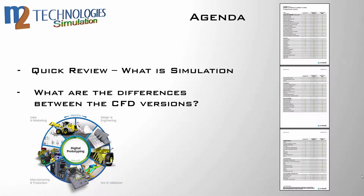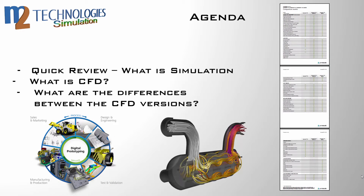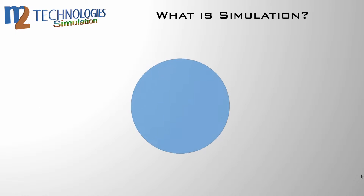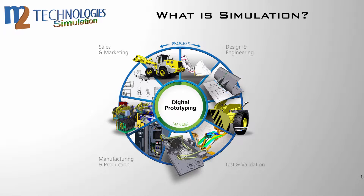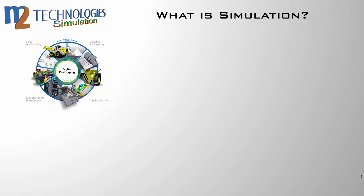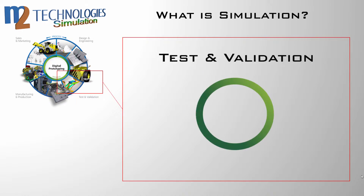First, I want to quickly review what the terms simulation and CFD mean and how they fit into your workflow. Simulation is an integral part of the digital prototyping process. Essentially, the 3D CAD model of your product is your digital prototype — the sole source of truth from which information flows to design and engineering, test and validation, manufacturing and production, and sales and marketing. Simulation takes place in the test and validation phase of the digital prototyping process.